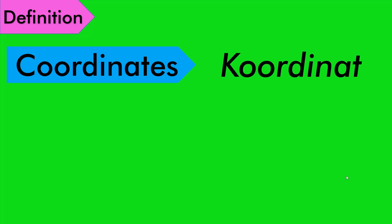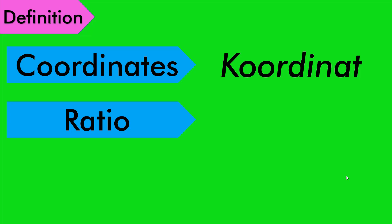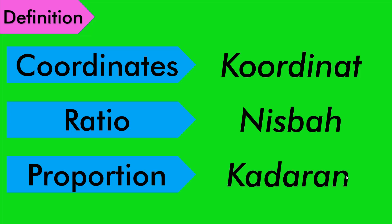So first of all, we are going to see about the definition. What is the definition? Apa itu makna? Coordinates means koordinat. Ratio means nisbah. And proportion means kadaran. So after this we are going to see what these three are all about — koordinat, nisbah dan kadaran. Kita akan tengok selepas ini.